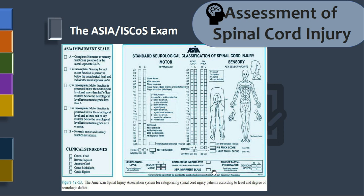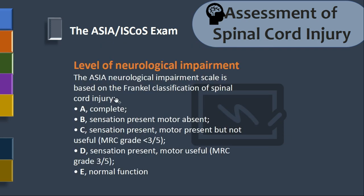The ASIA impairment scale is based on the Frankel classification: Grade A is complete injury; Grade B is sensation present but motor absent; Grade C is sensation present and motor present but grade less than 3 out of 5; Grade D is sensation present and motor functional — grade 3 out of 4 or better; Grade E is normal function — grade 4 or 5. You can also determine the zone of partial preservation from this assessment.